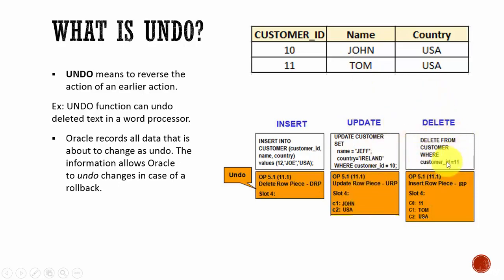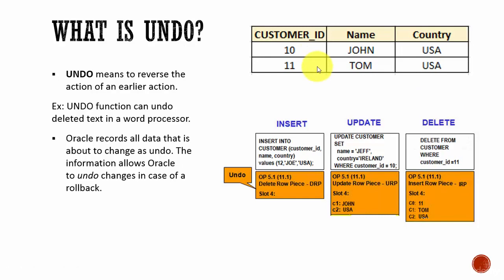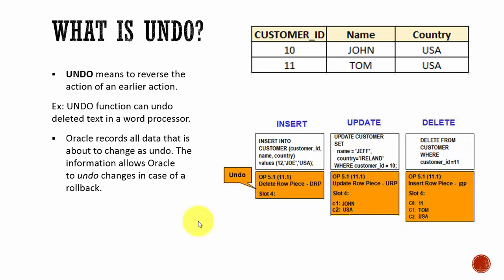If we have deleted a row with customer ID 11, the undo is insert. We deleted customer ID 11, so we will have one row. If we have to undo whatever row we deleted, if we insert that back, then we will have two rows. In this way: for an insert, the undo is a delete; for an update, the undo is an update; and for a delete, the undo is an insert. Oracle Database will maintain undo data so that it can roll back if necessary.